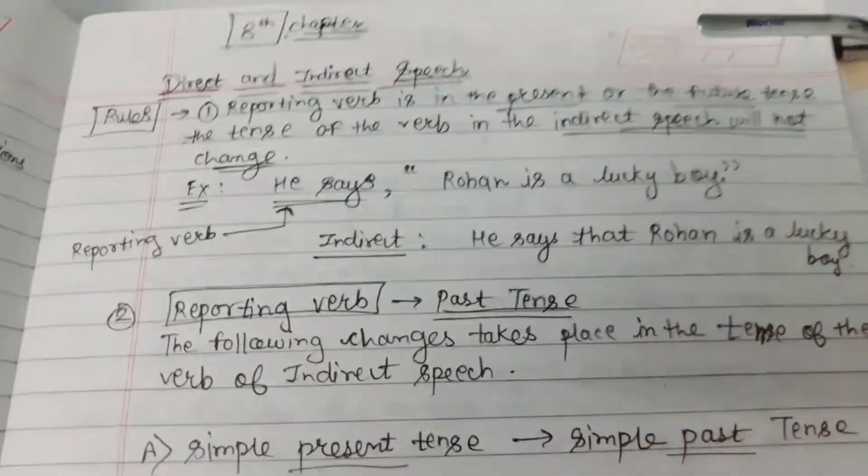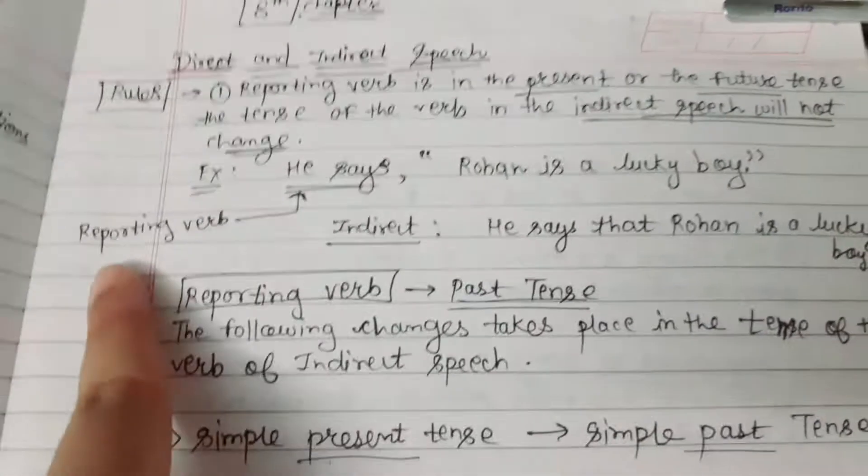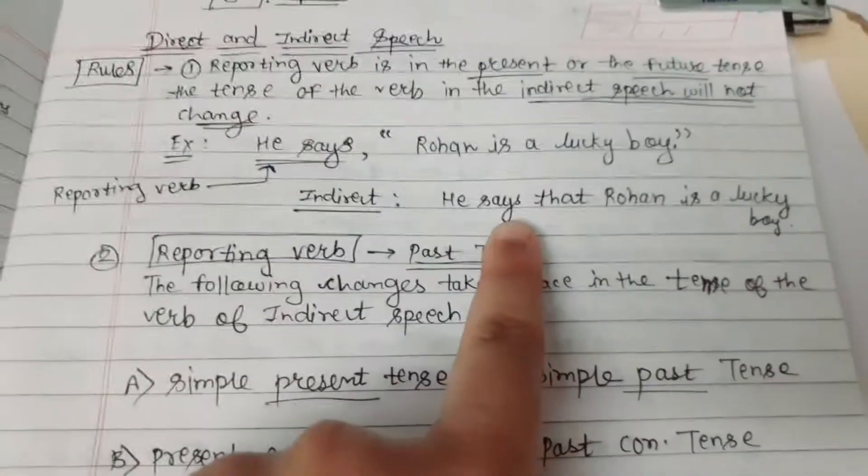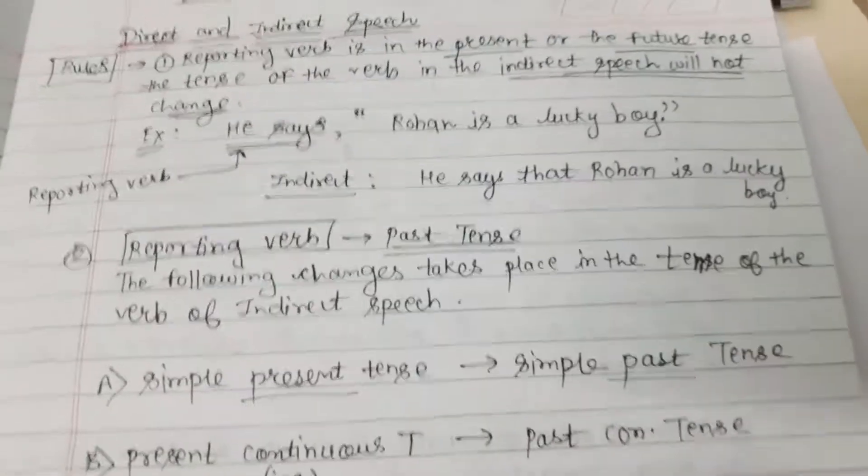For example: He says, 'Rohan is a lucky boy.' Here 'he says' is the reporting verb. In indirect speech: He says that Rohan is a lucky boy.